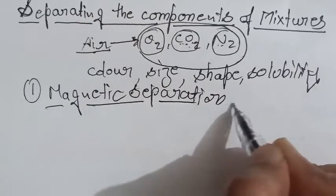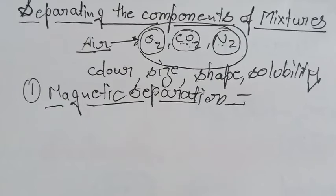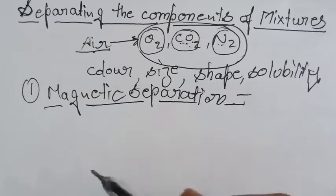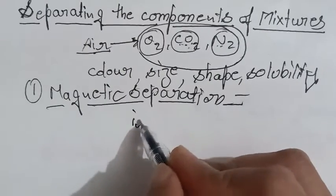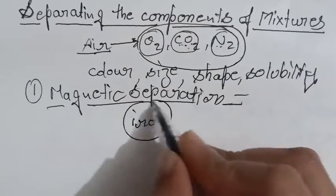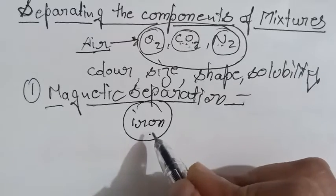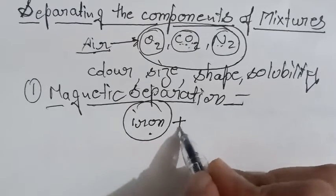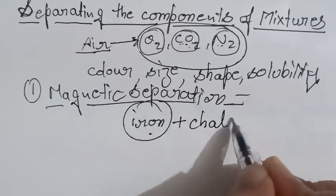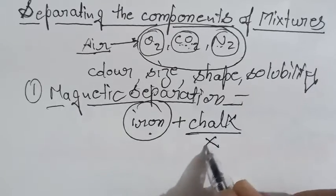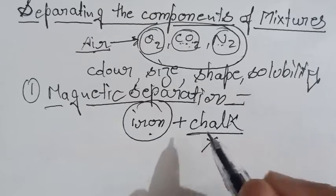As it is very clear from its name, we have to use a magnet to separate out substances. One substance should be a magnetic substance whereas the other one is non-magnetic. For example, as we know, iron is always attracted towards the magnet. So when iron combines with chalk, and as we know this chalk does not attract towards the magnet.